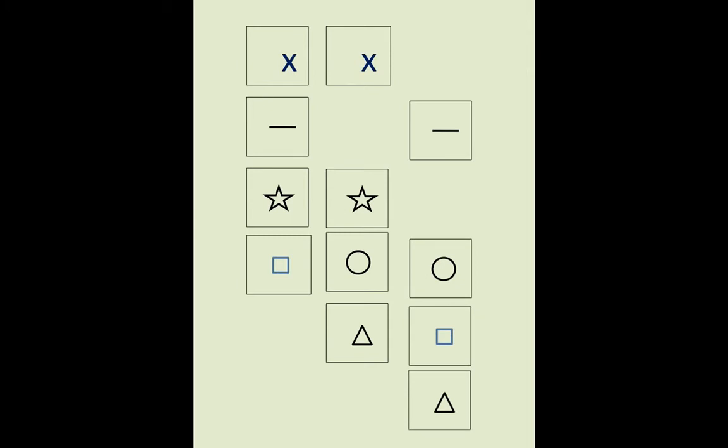Now in our fourth row we have a square, a circle, and a circle. So now this row should be all circles. So we move the square down.